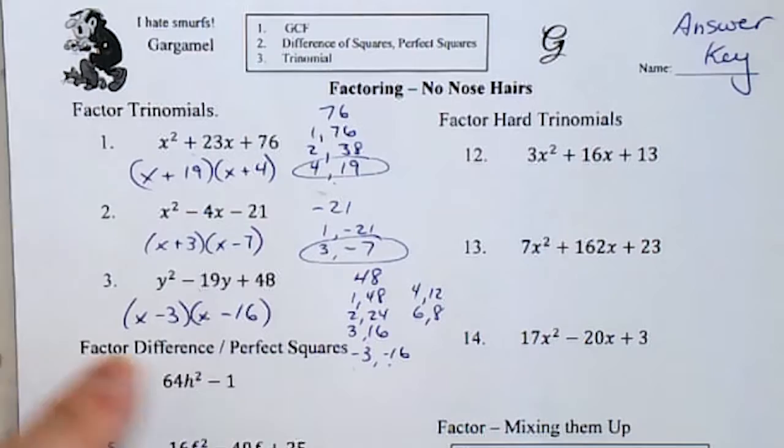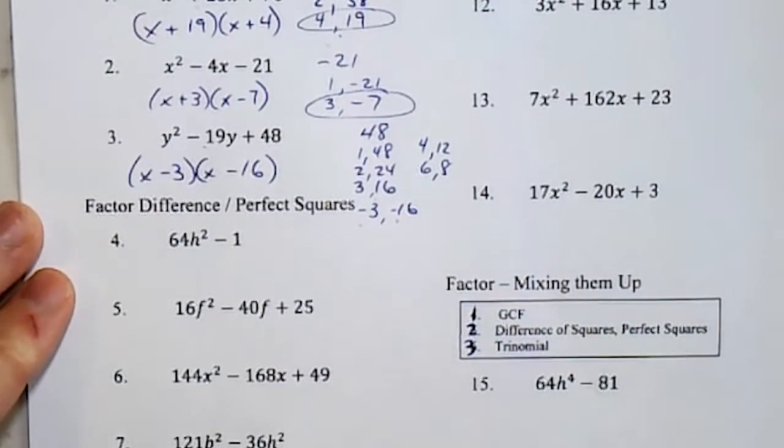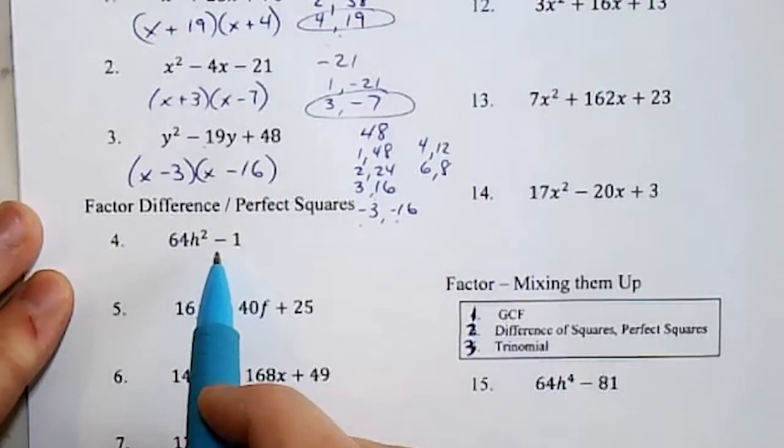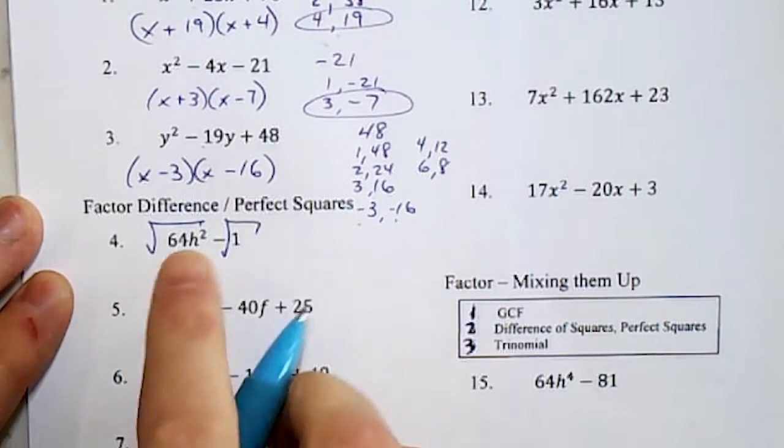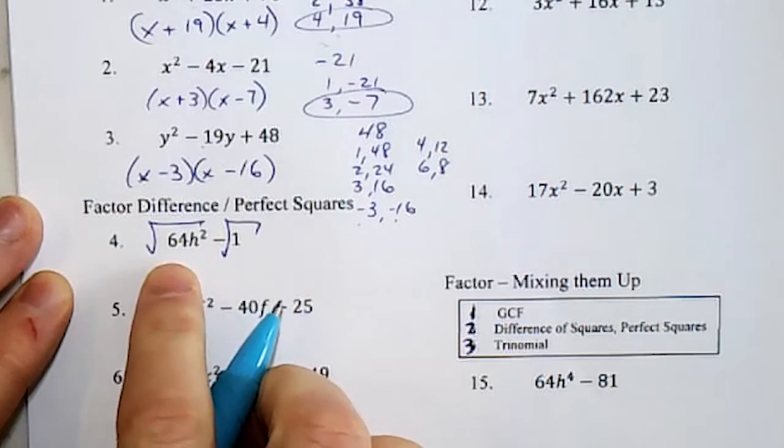Difference of squares, perfect squares. We're going to look for perfect squares at the ends, which we have, and we have a minus sign. Square root both. I'm going to ignore the negative in the middle and square root the ends.